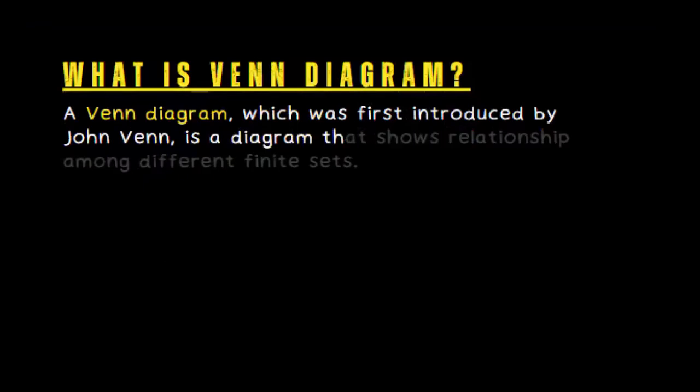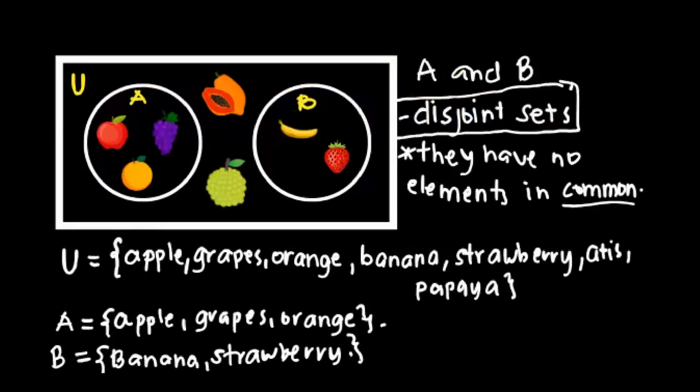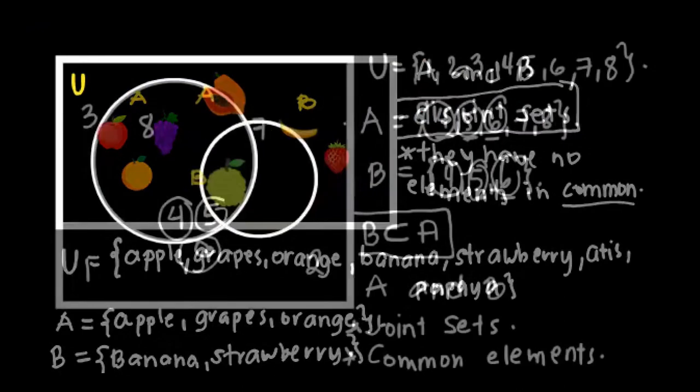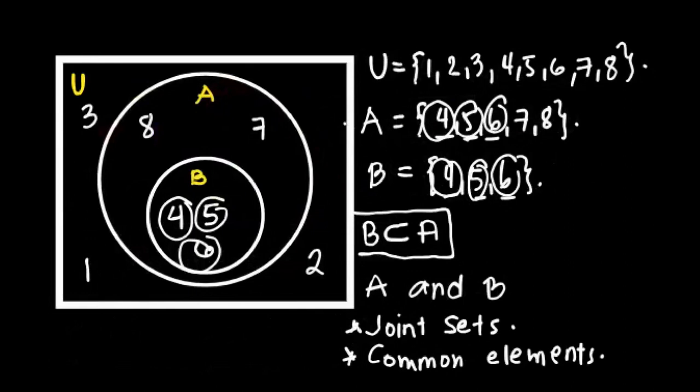Let's review, recap. We already defined the Venn diagram. It is a relationship among finite sets. And these are examples. The fruits are an example of disjoint sets because they have no elements in common. Also, this one is a joint set because they have common elements, which are 4, 5, and 6.